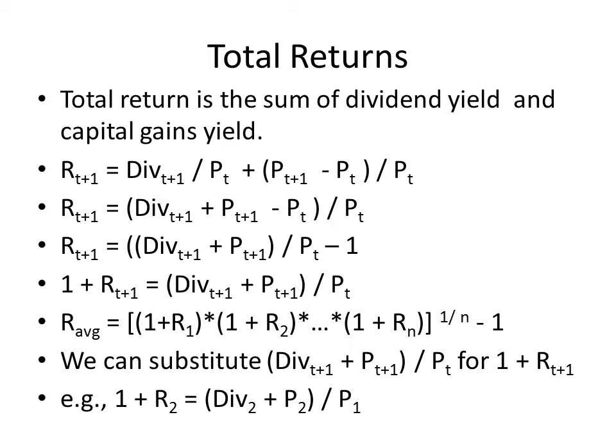Now, why did we do that? Because when we find geometric average, one of the things that we do is take all those 1 + R terms for the different periods and multiply them together. And so anywhere that we wanted to put in a 1 + R, all we have to do is substitute the dividend plus the price at time t+1 divided by the price at time t.